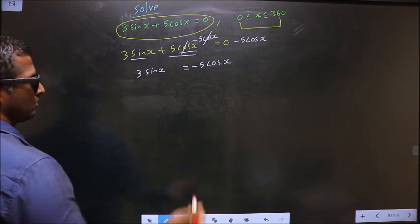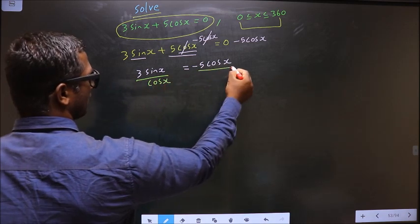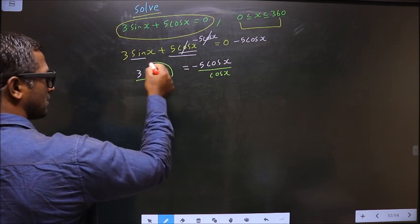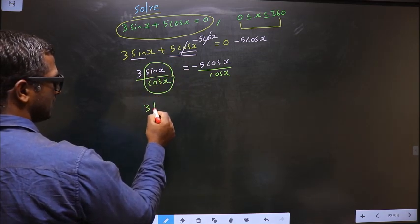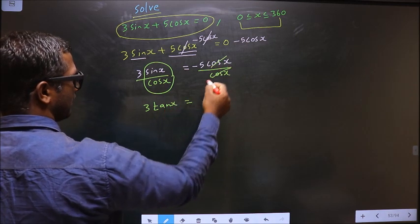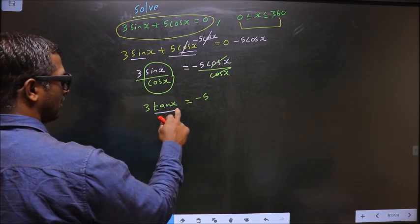Step 2. You divide by cos x. Why are we dividing with cos x? Because now sin by cos will change to tan. And here we get minus 5. Now we got tan.